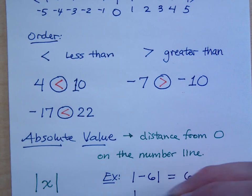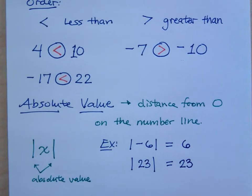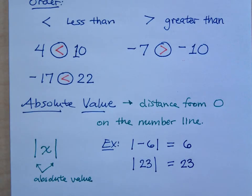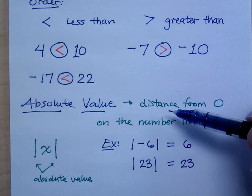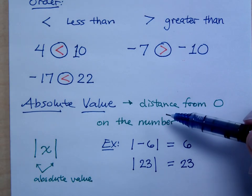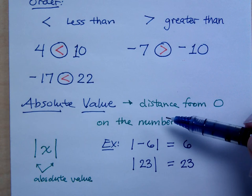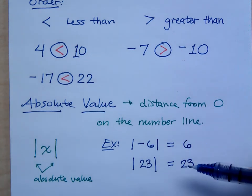If I have the absolute value of 23, what would you say? How many units, how many spots away from zero is the number 23? Just 23. It's 23. Here's the thing about absolute value. It's always going to return back to you a positive number, because absolute value is measuring what? Distance. Normally when we talk about distance, or the length of something, we use positive numbers, right? So absolute value is going to return back to us positive numbers.